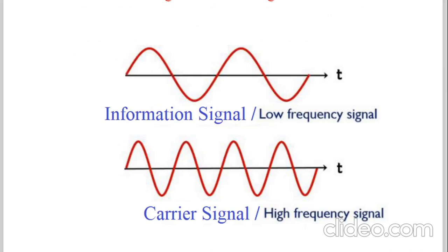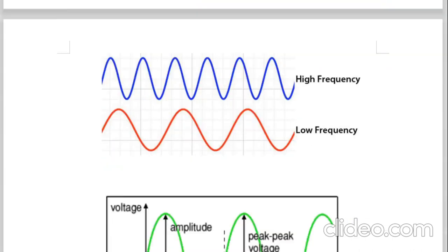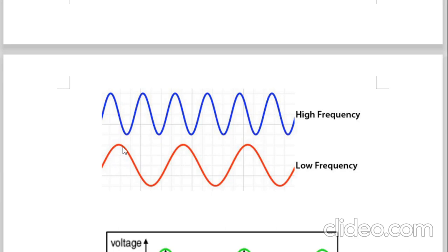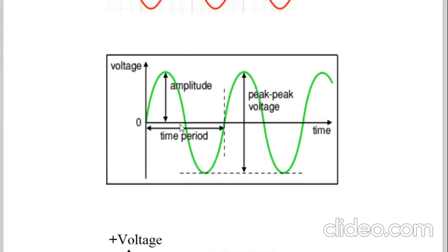Remember: in the process of modulation we have two signals. One is the low frequency signal which is the information signal, and another is the high frequency signal which is the carrier signal. The time period of the information signal is large, therefore frequency is low. The time of the carrier signal is small, therefore frequency is high. Both are sine waves, but one is low frequency and another is high frequency. Now let us understand what is meant by amplitude and frequency of a sine wave. A sine wave is a continuously varying signal with respect to time.